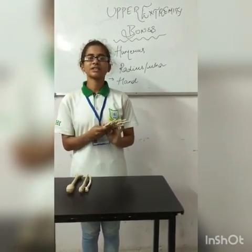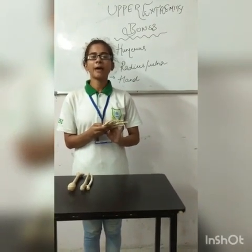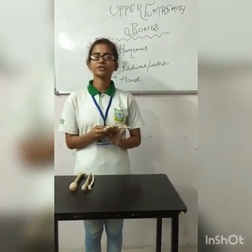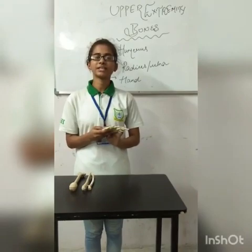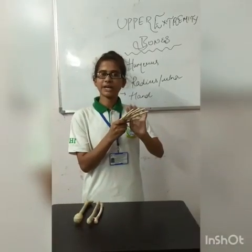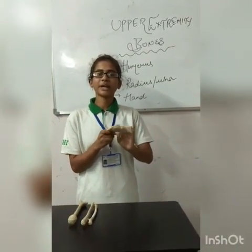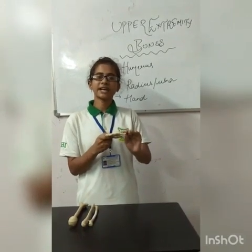Carpals are named as scaphoid, lunate, hamate, pisiform, trapezoid, triquetrum, trapezium, and then metacarpal. Metacarpals are 5. After metacarpal, digits are present.